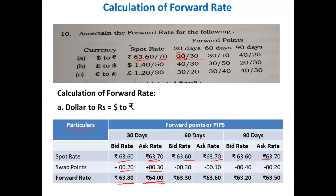For the 60-day forward rate, the spot rate remains 63.60 bar 63.70. The 60-day forward points are 30 bar 10, which is a decreasing trend, so we deduct. 63.60 minus 0.30 equals 63.30. 63.70 minus 0.10 equals 63.60. The 60-day forward rate is 63.30 bar 63.60.